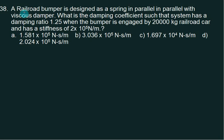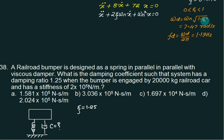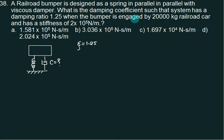Next we have a railroad bumper designed as a spring in parallel with a viscous damper. What is the damping coefficient? You want to know the value of damping coefficient such that system has damping ratio equals to zeta 1.25, which is overdamped. If it is overdamped, you have to change the equation. This is zeta square minus 1, naturally, because otherwise it becomes a complex number. When the bumper is engaged by 20,000 kg railroad car, mass is 20,000 and stiffness is 2 into 10 to the power 5.